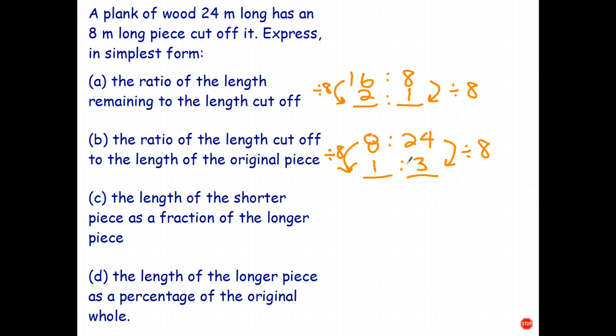What about the length of the shorter piece as a fraction of the longer piece? Well, the shorter piece is eight. The longer piece is 16. So, the length of the shorter piece as a fraction of the longer piece is 8 sixteenths, and, of course, we can divide top and bottom by eight, and that simplifies to one-half.